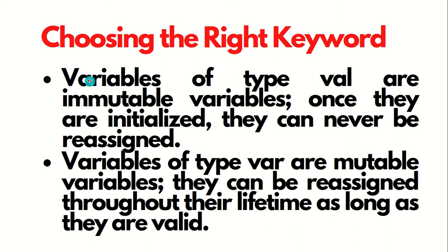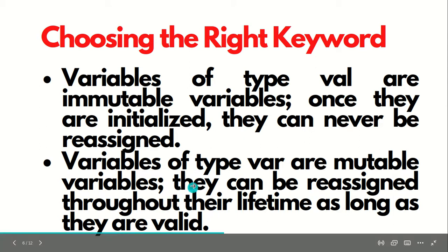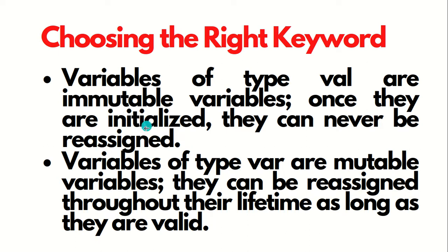How do we choose the right keyword? Variables of the type VAL are immutable variables — once they are initialized, they can never be reassigned, that's why they are called immutable. Variables of type VAR are mutable variables, meaning they can be reassigned throughout their lifetime as long as they are valid. We'll discuss mutable and immutable separately in the next video. For now, just remember: mutable means which we can change, immutable means which we cannot change.